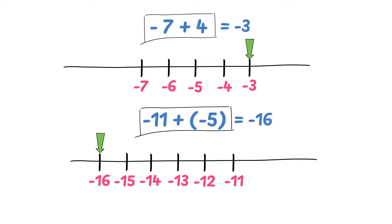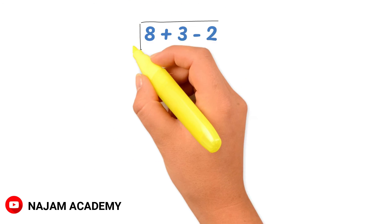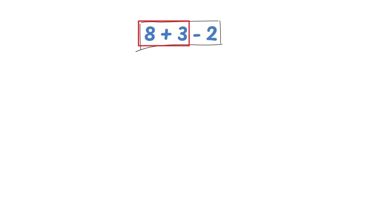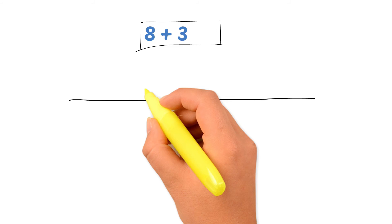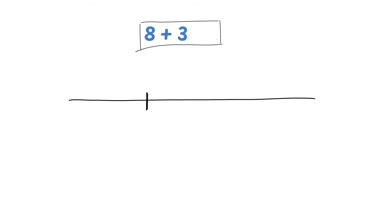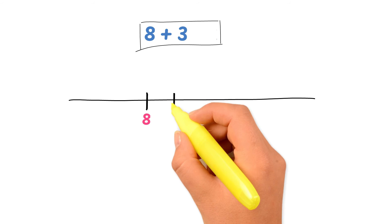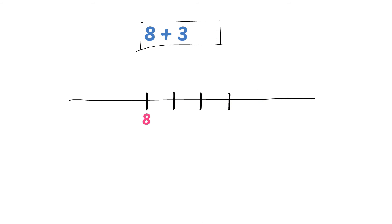Finally, let me teach you how you can add or subtract 3 integers. For example, consider 8 plus 3 minus 2. Firstly, take only the first two integers and forget about the third. Draw a number line and write here the first integer which is 8. The second integer is positive 3, so we travel 3 spaces to the right: 1, 2, and 3. This is 9, 10, and 11. So 8 plus 3 is equal to 11.